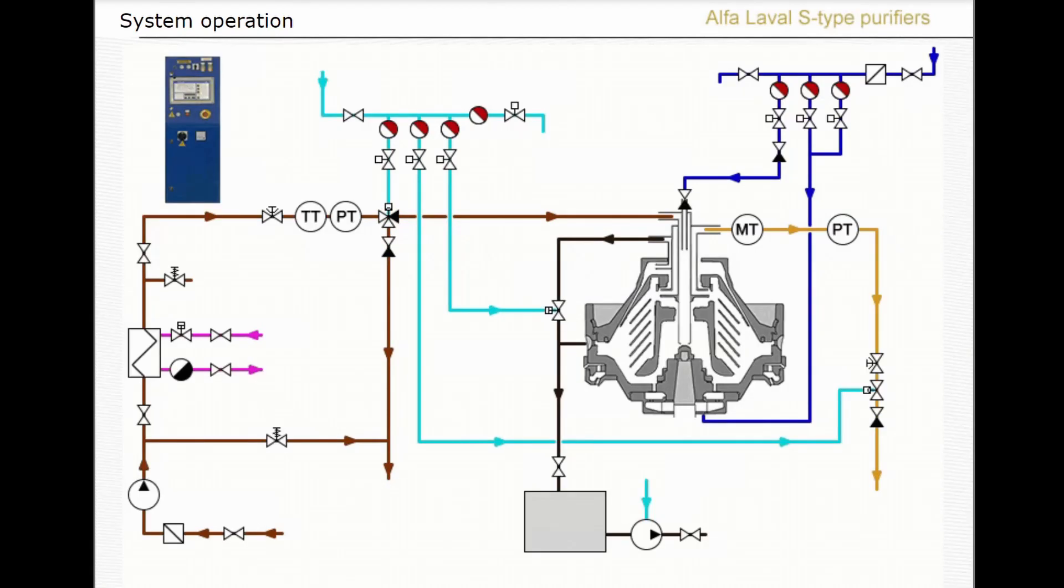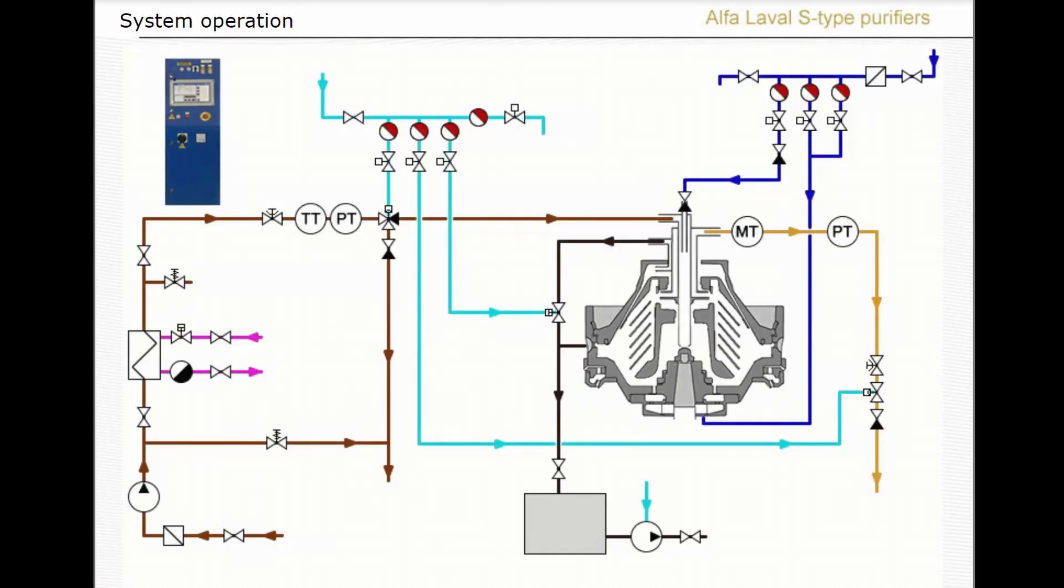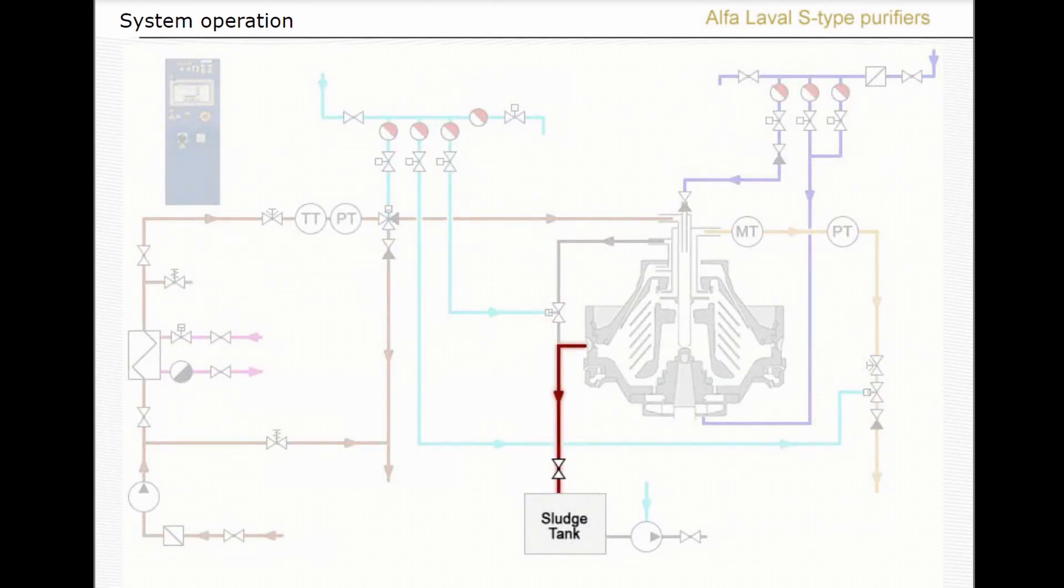Oil cleaned in the separator flows to the heavy fuel oil service tank. The water transducer continuously measures the water content in the cleaned oil and the regulating valve controls the back pressure in the clean oil outlet. Discharge of sludge and water from the bowl takes place at preset time intervals and the sludge exits through the discharge line.